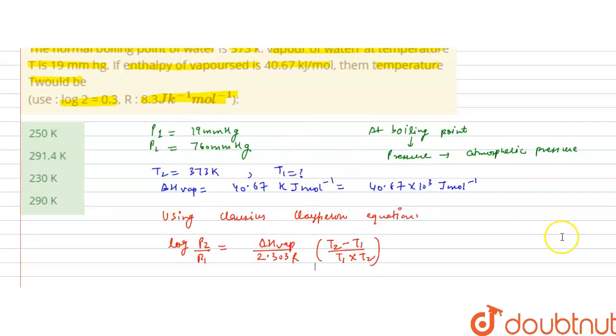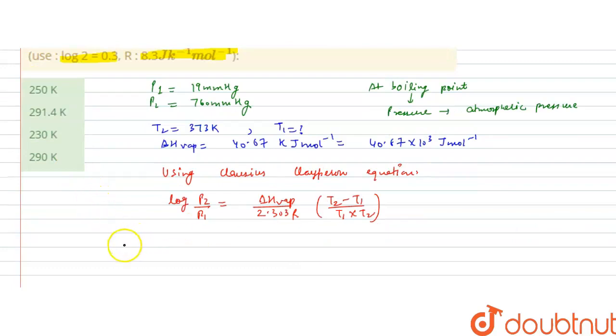So log P2 by P1, P2 is 760. So if we put the values, it will be log 760 by 19.